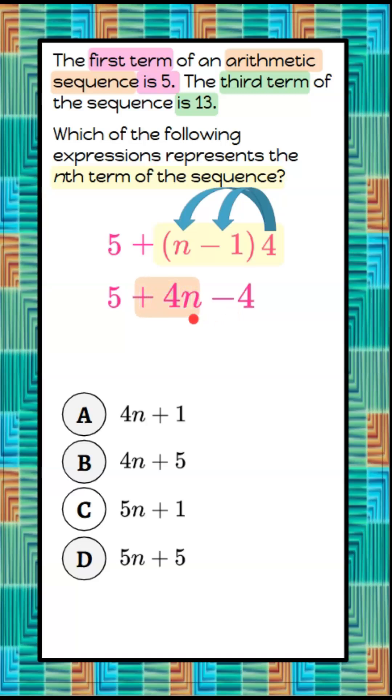We'll start with our variable term. There's only 1, 4n. We'll add our constants. 5 and negative 4 are positive 1. So we can see that the expression to get to any term of this arithmetic sequence is answer choice A, 4n plus 1.